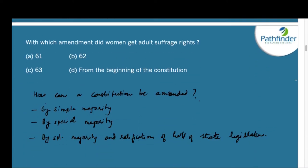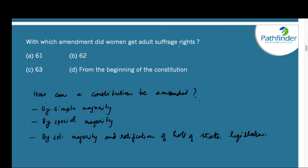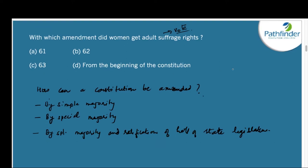Next question: With which amendment did women get adult suffrage rights? Suffrage rights refer to the right to vote. In India, earlier you could vote only at the age of 21 years. This was brought down to 18 years by the 61st Amendment to the Indian Constitution. So with which amendment did women get adult suffrage? The answer is the 61st Amendment.